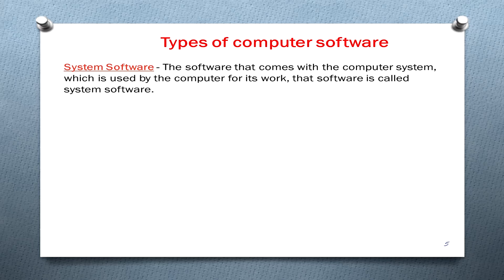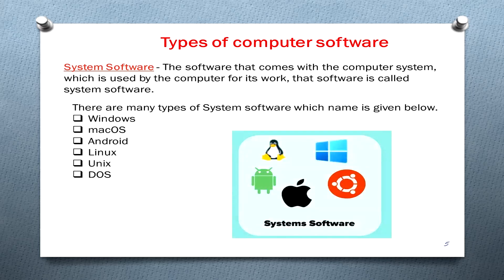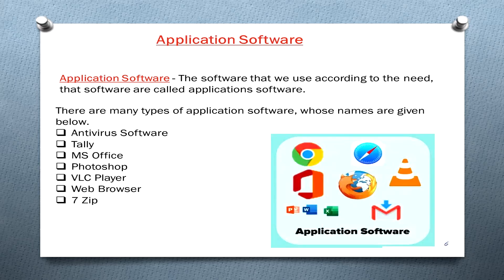System software is the software that comes with the computer system and is used by the computer for its own work. Examples of system software include Windows, Mac OS, Android, Linux, and UNIX.